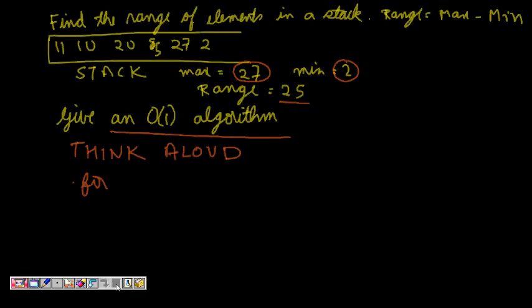We are given a question: find the range of elements in a given stack. Range is the difference between the maximum value and the minimum value of elements in the stack. For example, if we have a stack with elements 11, 10, 25, 27, and 2, the max is 27 and the min is 2, so the range is 27 minus 2, which is 25.